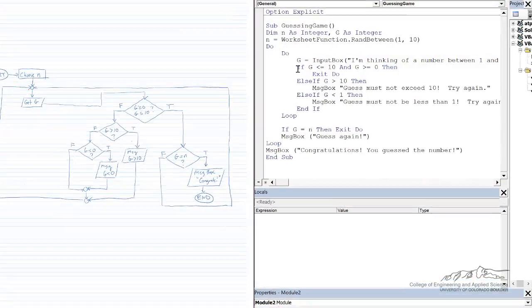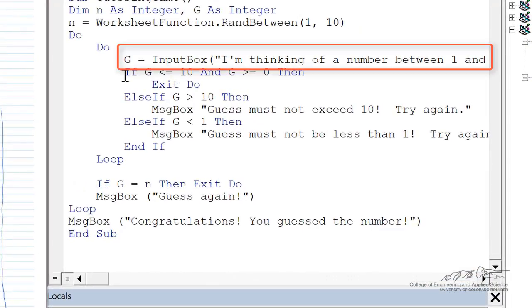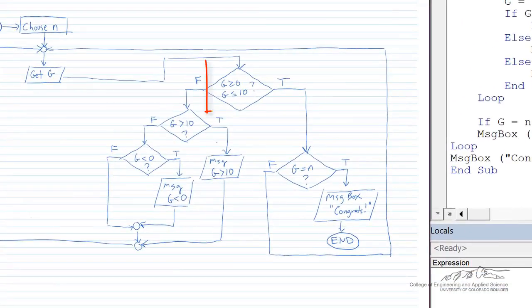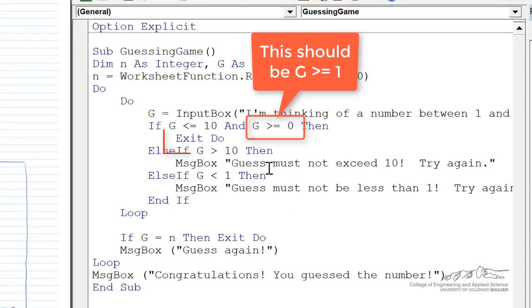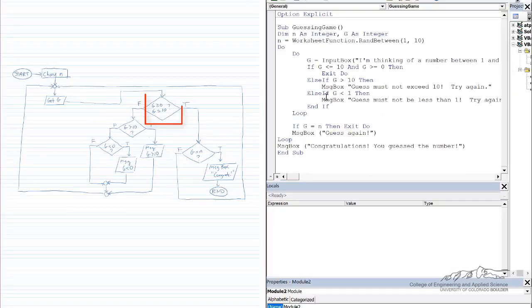Inside the inner do loop, we get G, the input from the user, and then we ask ourselves, is G less than or equal to 10 and greater than or equal to 0? If that's the case, then we exit the do and we move on to the rest of the game.